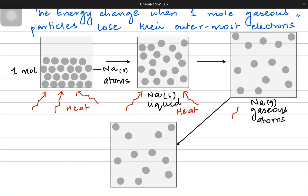If I continue to give heat to this one mole of gaseous sample, now the heat absorbed is going to help in the releasing of the electron from the outer shell of the sodium. Each sodium is going to lose its electron and become a positive ion, thereby becoming a cation. Each sodium becomes a positive ion and the electrons are going to be released — I am drawing these with a blue dot. It is one mole in amount.